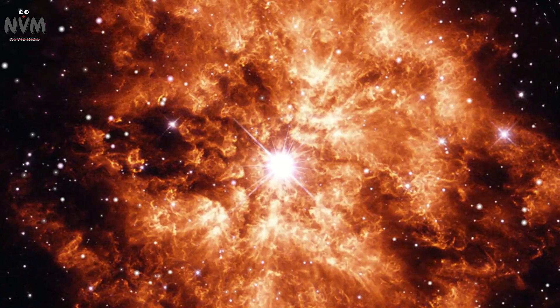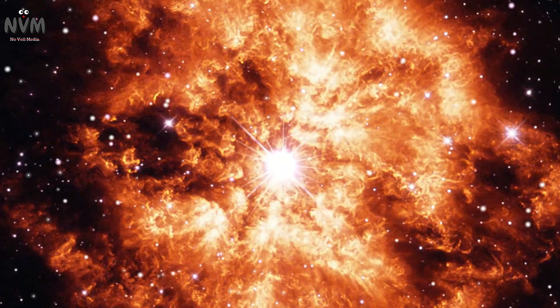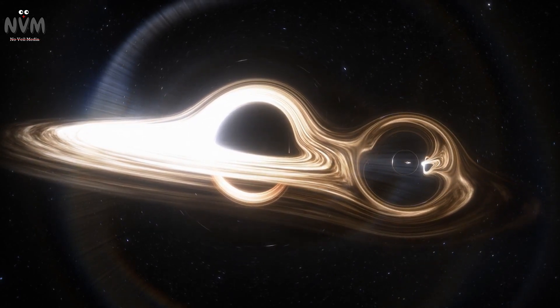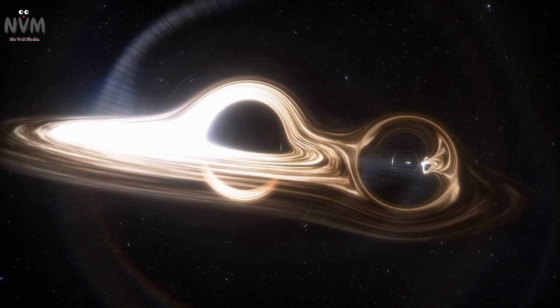Supernovae come in different types, but the two most common are Type 1 and Type 2. Type 1 supernovae occur in binary star systems, when a white dwarf accumulates matter from a companion star until it reaches a critical mass, causing it to detonate at about 1.4 solar masses, otherwise known as the Chandrasekhar limit.